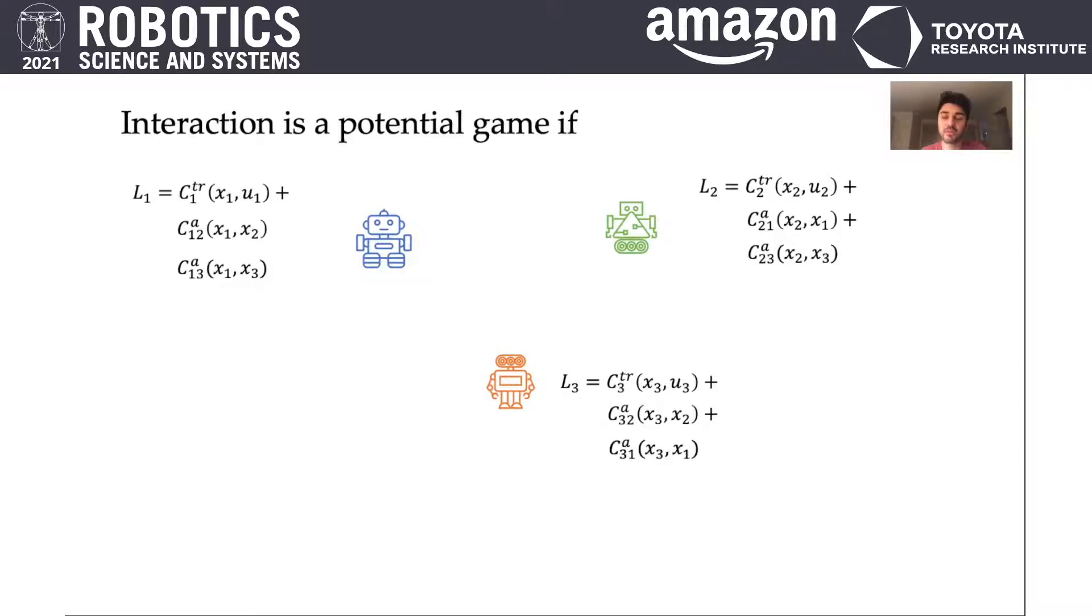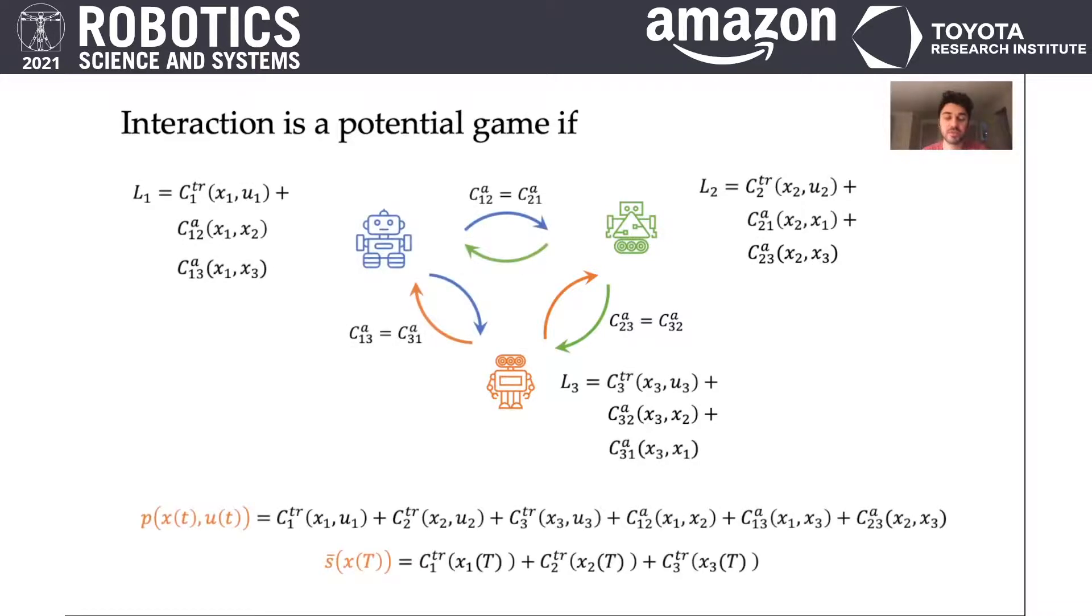In this example, this means that if agent 1 penalizes collisions with agent 2 the same way that agent 2 penalizes collisions with agent 1, agent 1 penalizes collisions with agent 3 the same way that agent 3 penalizes collisions with agent 1, and finally, agent 3 penalizes collisions with agent 2 the same way agent 2 penalizes collisions with agent 3, then the game is a potential game.